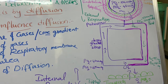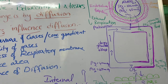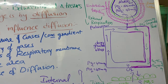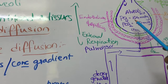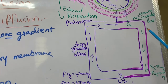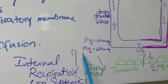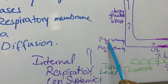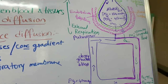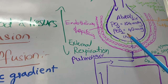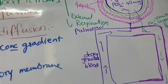You must remember the partial pressure values: atmospheric pO₂ is 159 mm Hg; at the alveolar region it is 104 mm Hg; in oxygenated blood it is 95 mm Hg; and in tissues and deoxygenated blood it is 40 mm Hg. For carbon dioxide: atmospheric pCO₂ is 0.3 mm Hg; in the alveoli it is 40 mm Hg; in oxygenated blood it is also 40 mm Hg.